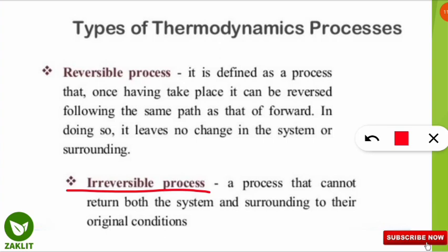An example of an irreversible process is burning fuel to run a vehicle. Once the fuel is burned and energy is generated to run the vehicle, we cannot recover the fuel — that is why it is irreversible. If it were reversible, there would be no shortage of fuel in the world.